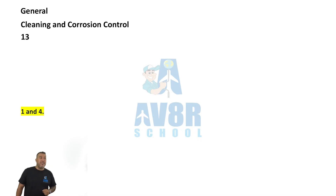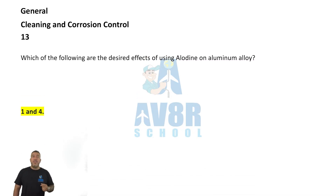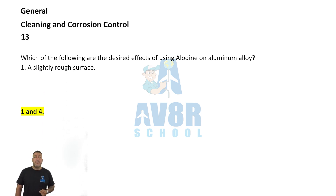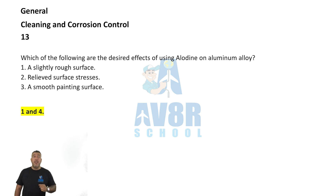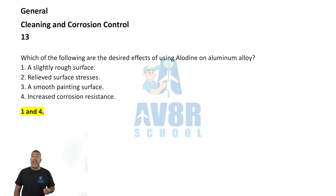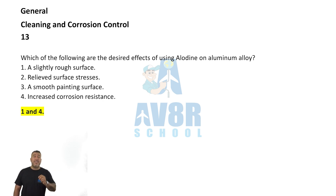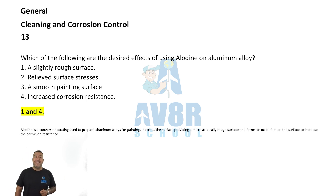Cleaning corrosion, number 13. Which of the following are the desired effects of using Alodine on aluminum alloys? Number one: a slightly rough surface, and number four: an increased corrosion resistance. Alodine leaves a slightly rough surface and also increases the corrosion resistance. The answers are number one and number four.